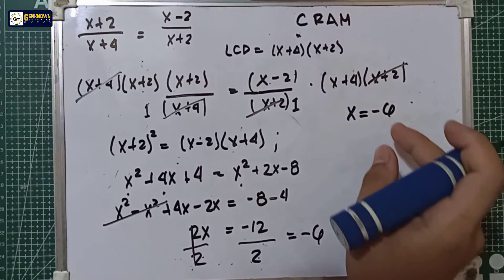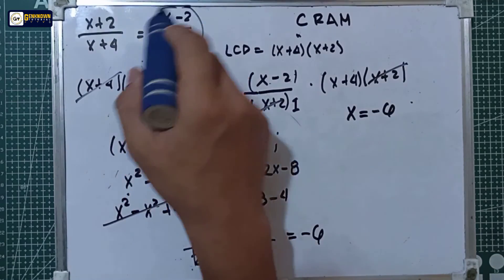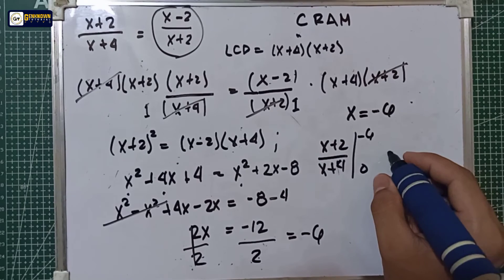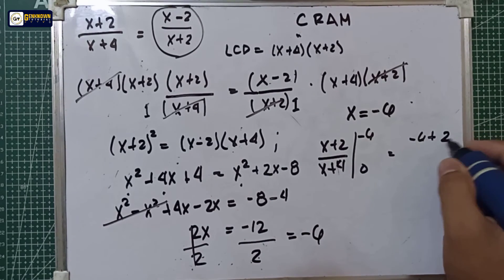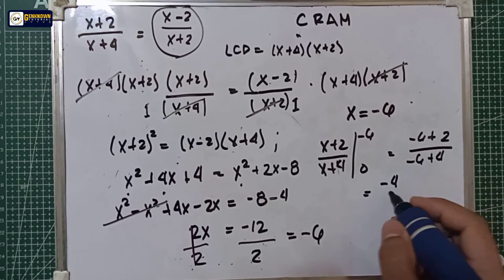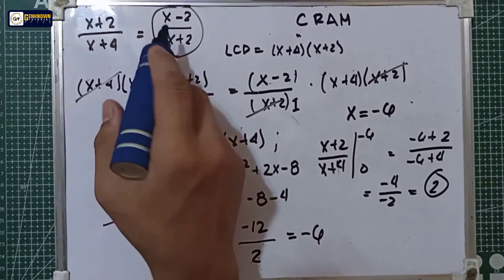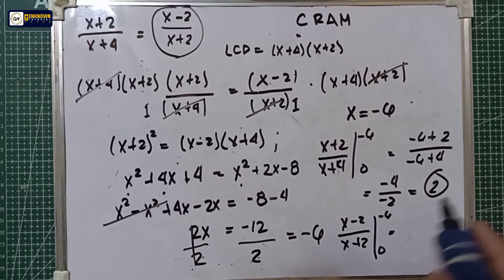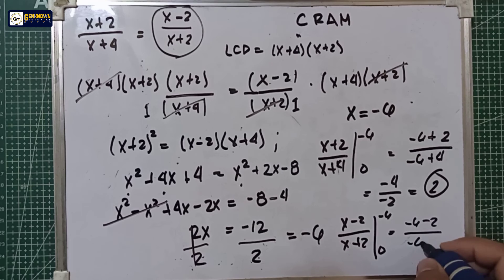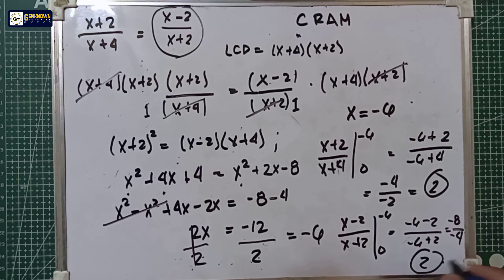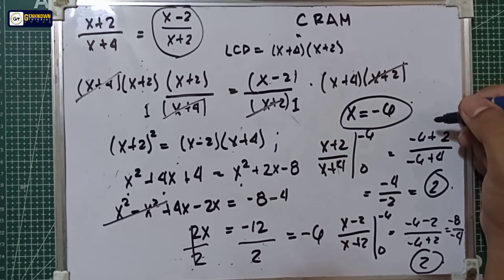To verify, substitute x = −6 into both sides. Left side: (−6 + 2) / (−6 + 4) = −4 / −2 = 2. Right side: (−6 − 2) / (−6 + 2) = −8 / −4 = 2. Both sides equal 2, confirming that the value x = −6 is correct.